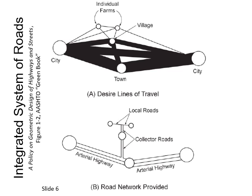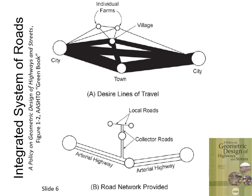This concept of an integrated system of roads is taken from AASHTO's A Policy on Geometric Design of Highways and Streets, also known as the Green Book, 6th edition, 2011. The schematic illustration shows desire lines of travel, with circles representing trip origins and destinations, and line thickness representing relative amounts of travel desire. The sizes of the circles indicate the relative trip generating and attracting power of the places shown. Thicker lines represent more desire between cities and towns, and smaller lines represent less desire between farms and villages.